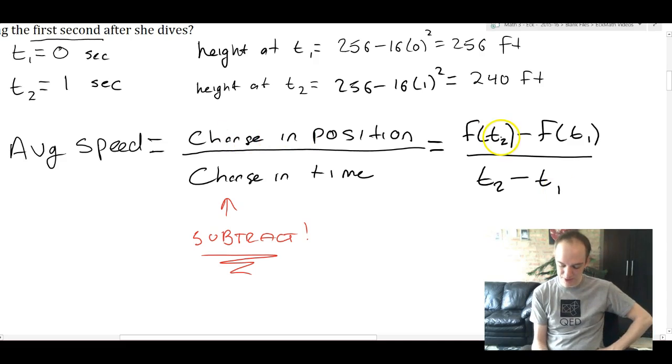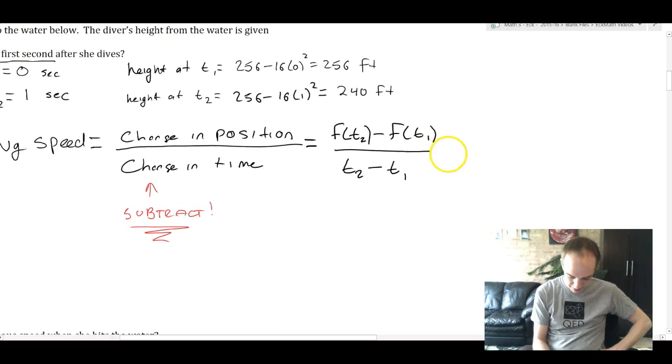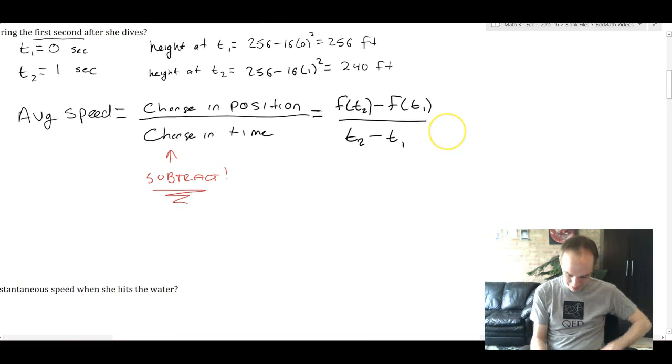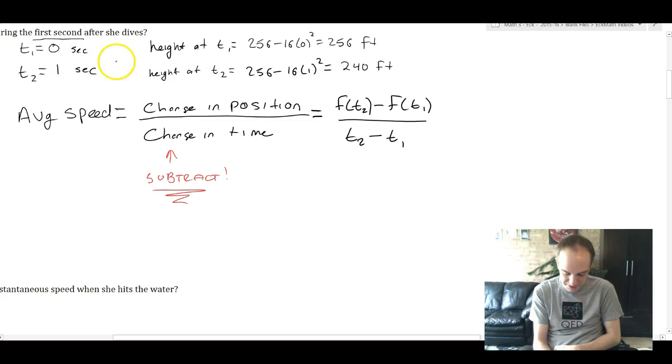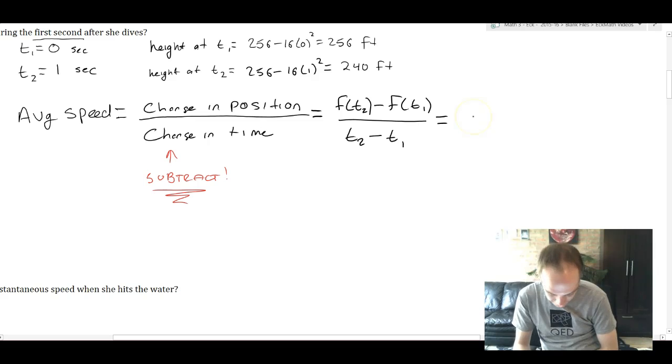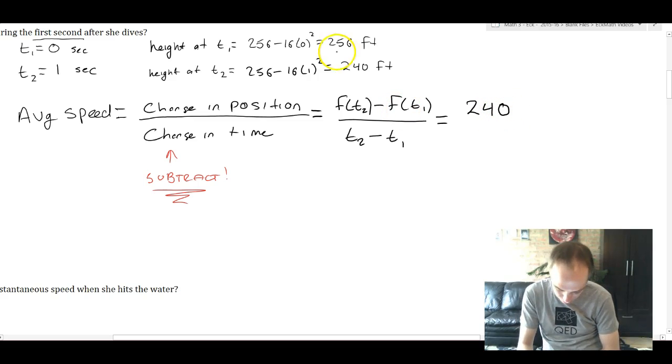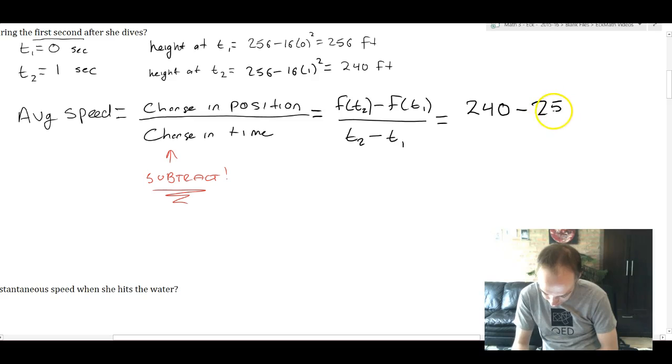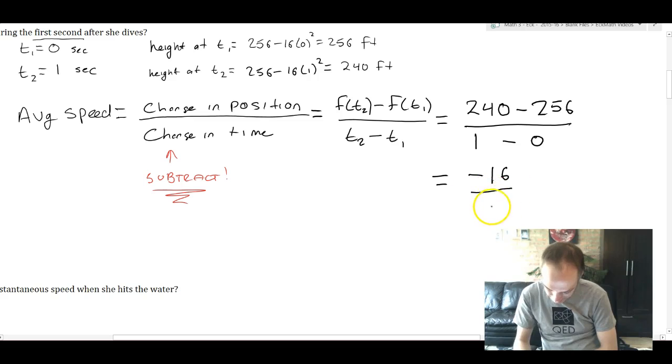I've got my times, I've got my positions, I've got my equation written down. All we have to do is plug in. The height at t2 was 240, so that's going to go over there. The height at t1 was 256, so 240 minus 256. Time two was one second, time one was zero seconds. So this is going to be negative 16 divided by one or just negative 16.